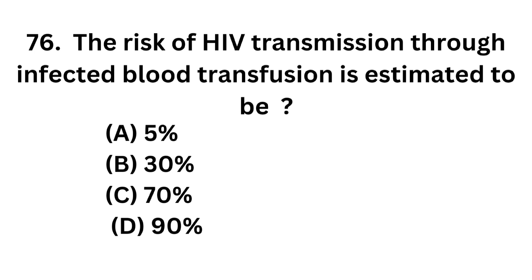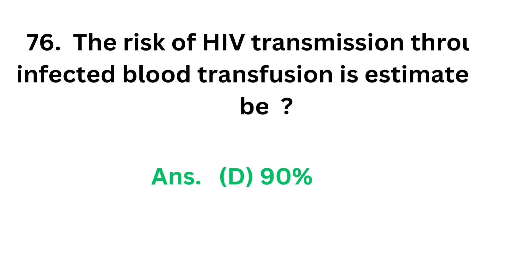Question 76. The risk of HIV transmission through infected blood transfusion is estimated to be: Option A: 5%. Option B: 30%. Option C: 70%. Option D: 90%. The correct answer is Option D. There is a 90% chance of risk of HIV transmission through infected blood transfusion.